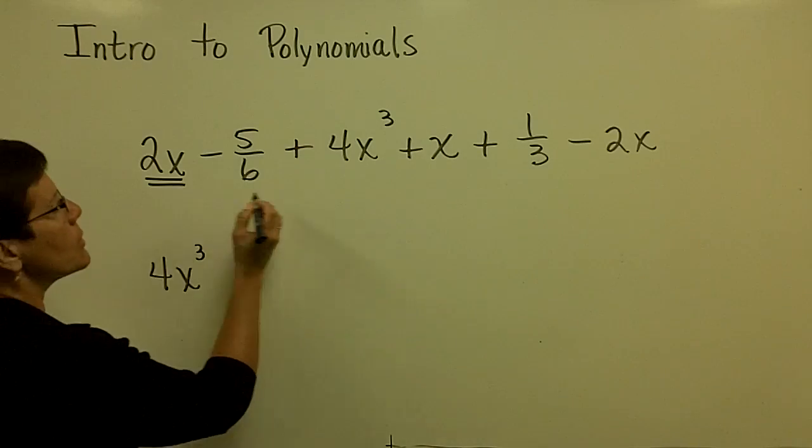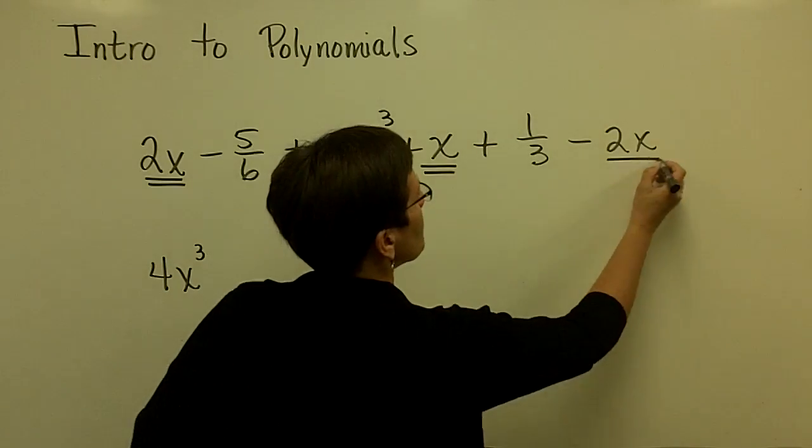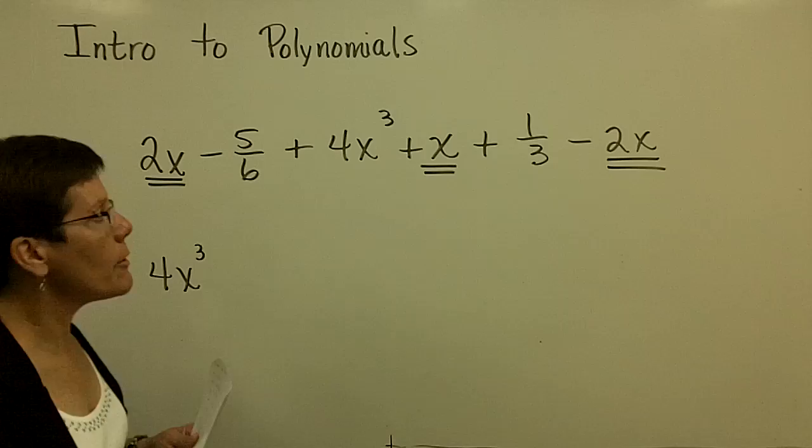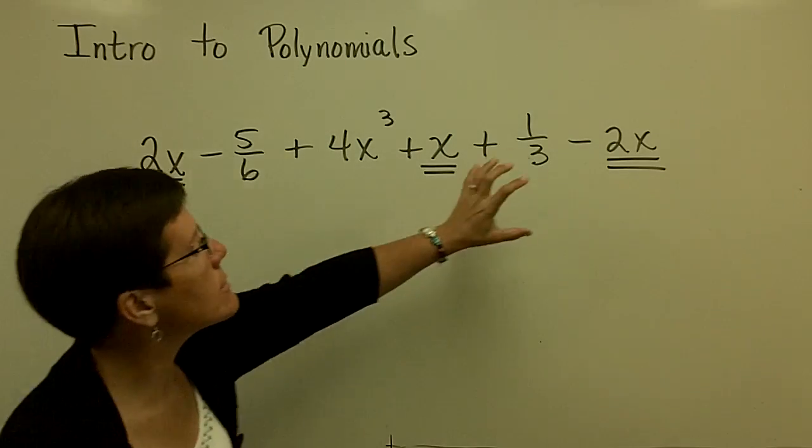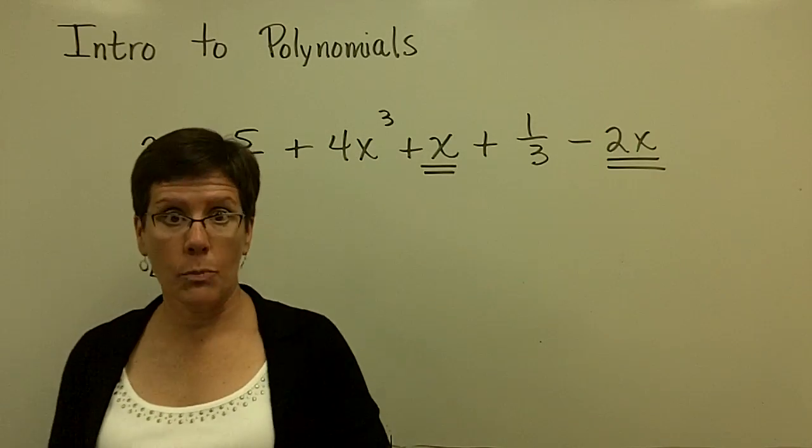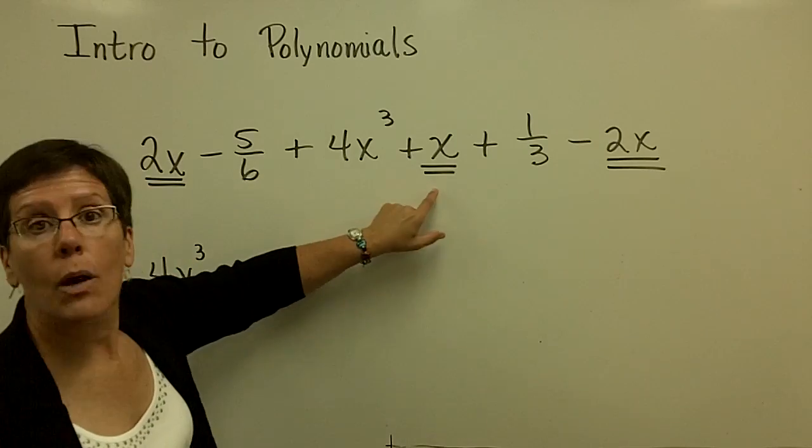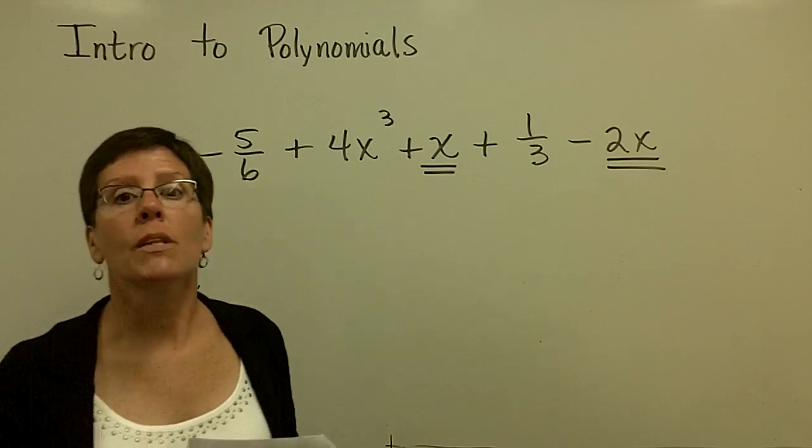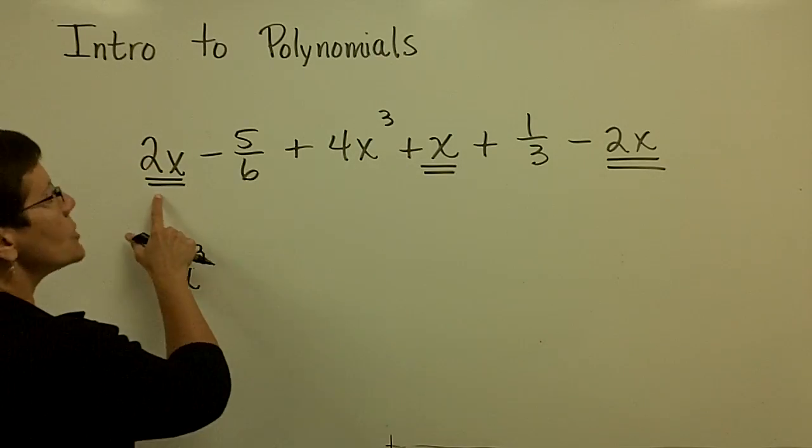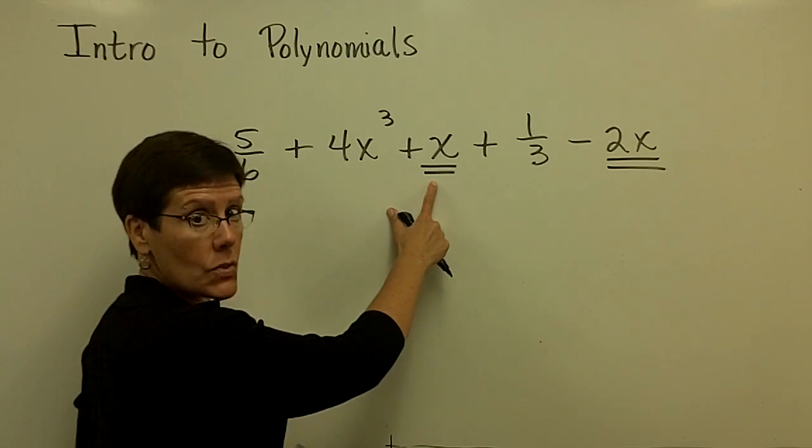I don't think I have any x² terms. So I'm going to go to my x terms next. And I'm going to work from left to right. However, if you happen to know that this +2x and that -2x add to be 0, and then you have just that 1x left, that's fine. But if you work from left to right, 2x + 1x is 3x.